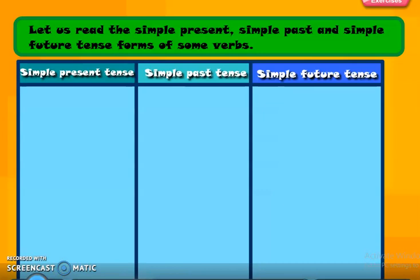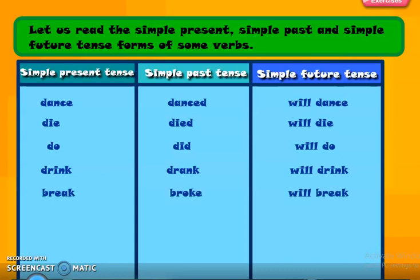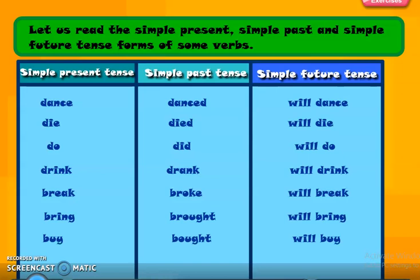Simple present tense, simple past tense, simple future tense. Dance — danced — will dance. Die — died — will die. Do — did — will do. Drink — drank — will drink. Break — broke — will break. Bring — brought — will bring. Buy — bought — will buy. Blow — blew — will blow. Get — got — will get.